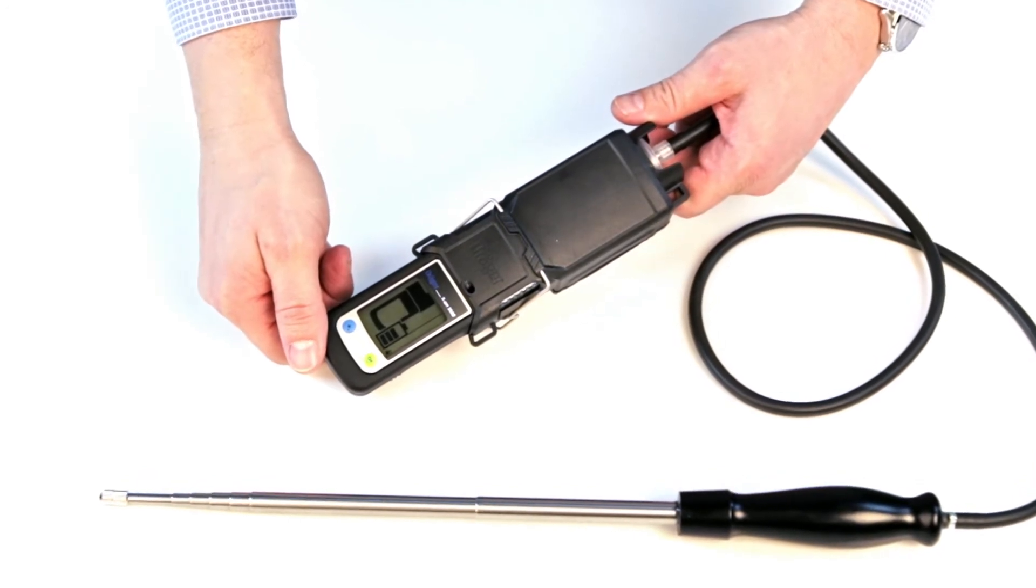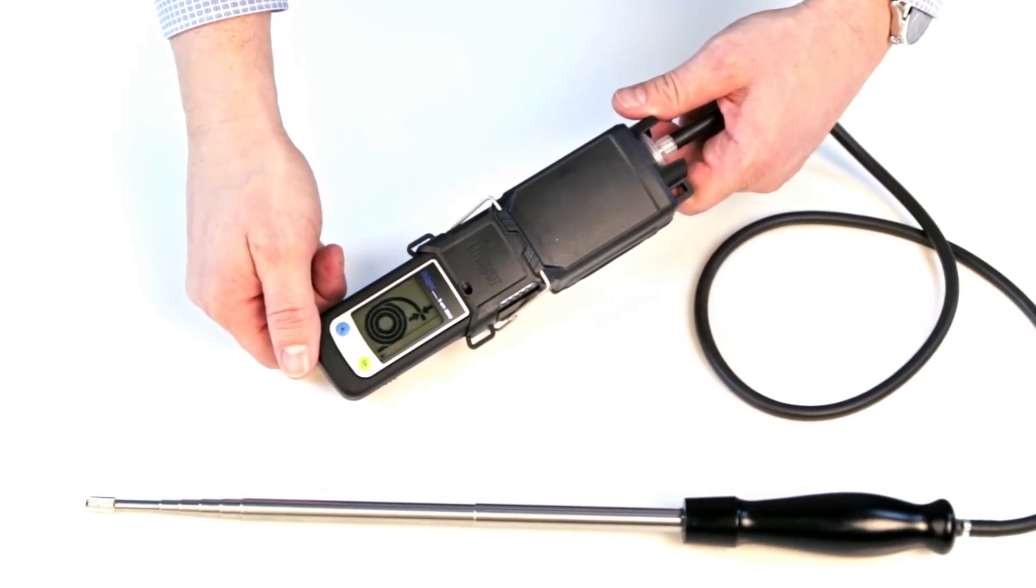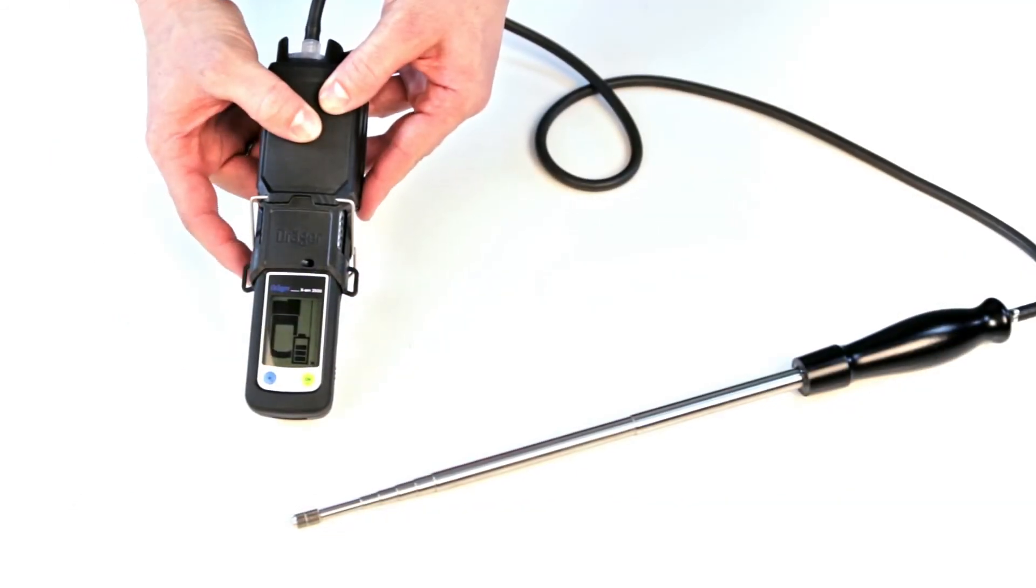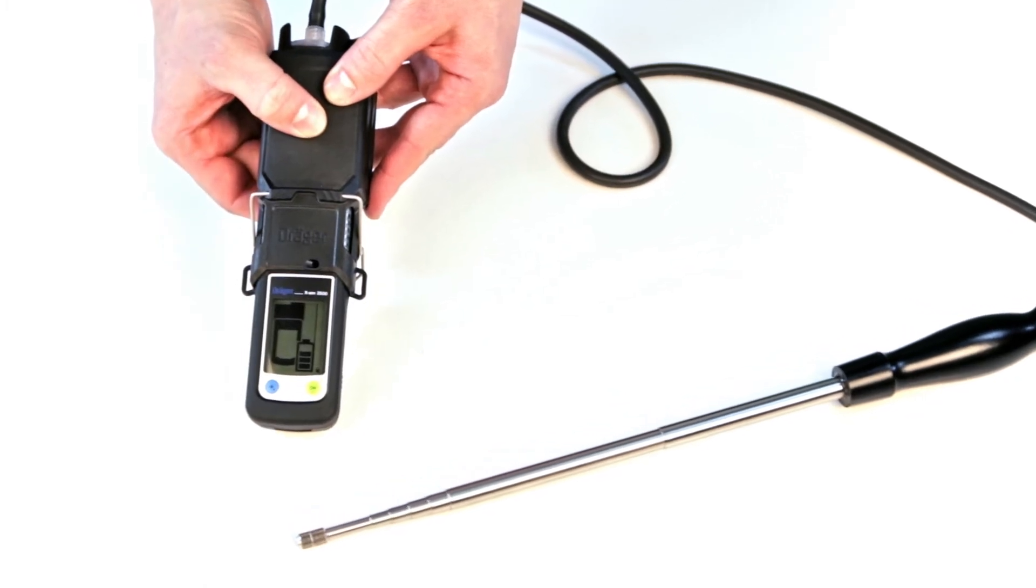Once the pump and the device are properly connected, a self-test will automatically initiate. The pump will start and the display will show a symbol indicating the battery status of the pump, followed by the flow check symbol.